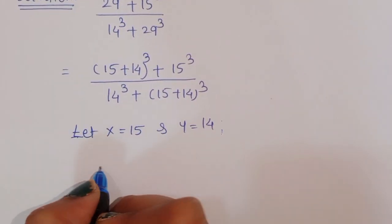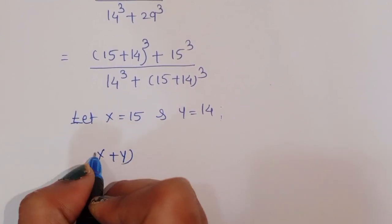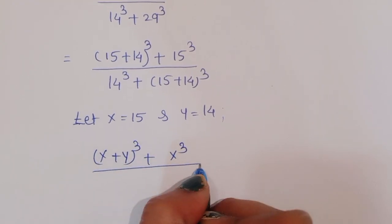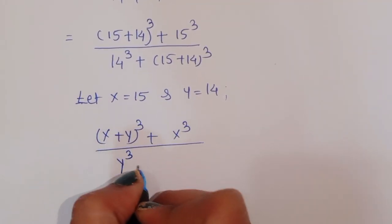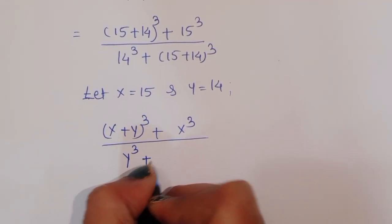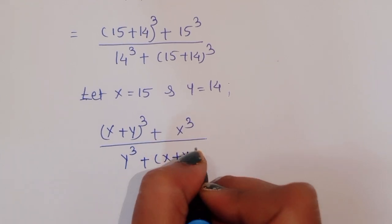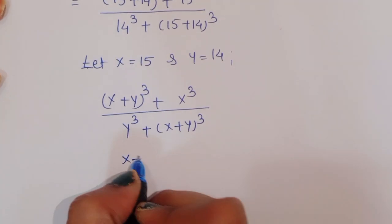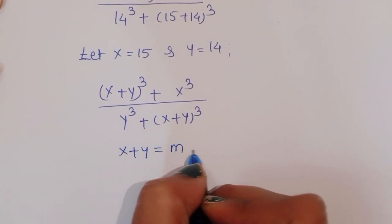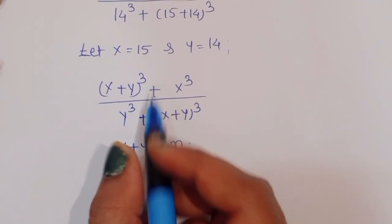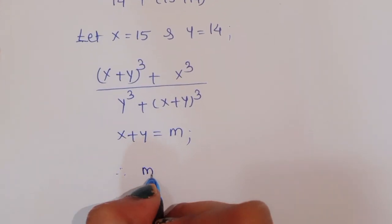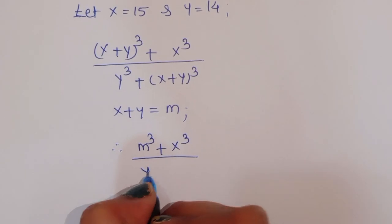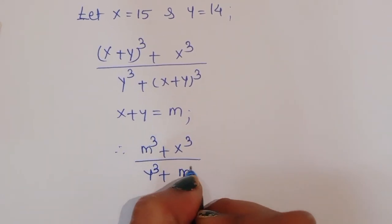Therefore we can write (x+y)³ + x³ divided by y³ + (x+y)³. Now let m equal x plus y, so we can write this as m³ + x³ divided by y³ + m³.